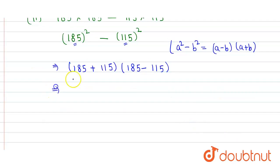When we add these two numbers we get 300, and in multiplication when we subtract we get 70. When we multiply these two numbers we get 21,000. So that's our answer.